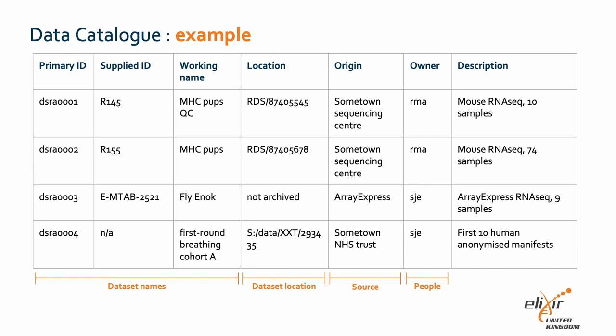Here's an example of a team's data catalogue. This example has metadata for the dataset, people and source. For dataset metadata, there is primary ID, supplied ID, working name and location. For people metadata, there is owner — here we have included a person's initials, but you could expand this to include their ORCID for example. It's important to use a method where you can identify the person being referenced. The column origin is the source metadata. Description could fall into dataset metadata, but also be part of the search metadata with keywords such as mouse, RNA-seq, human, etc.